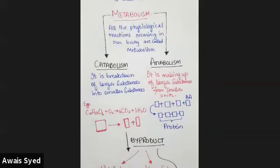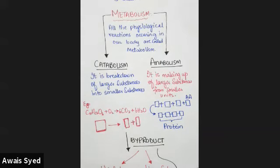When you talk about catabolism, you can give the example of the breakdown of glucose. In this process, carbon dioxide is an excretory waste product. If you have an excessive amount of water, it will also be a waste product for us. And we get energy that we utilize.